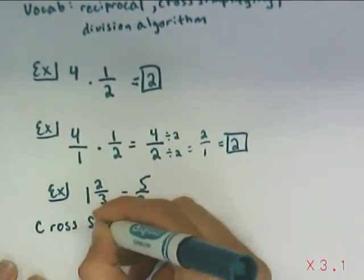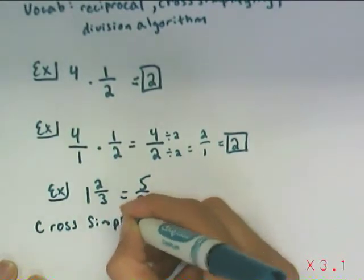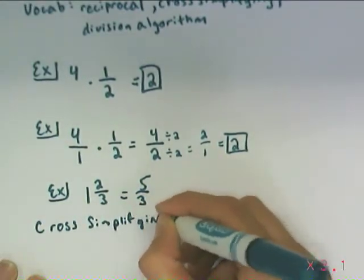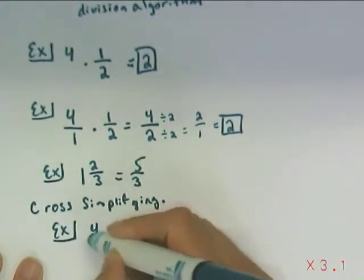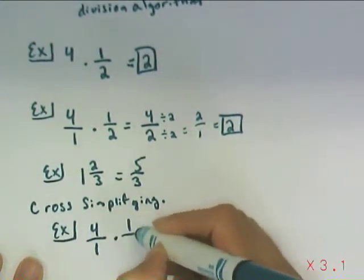So when I say cross-simplify, that just means divide out the common factor shared by the numerator and the denominator. So again, with the same exact example, I had 4 over 1 times 1 half.